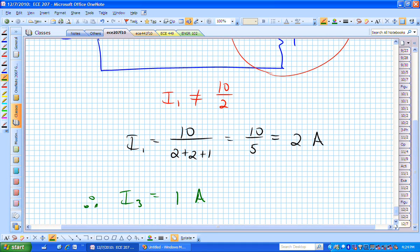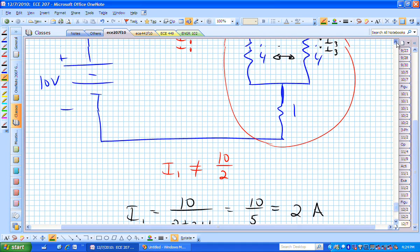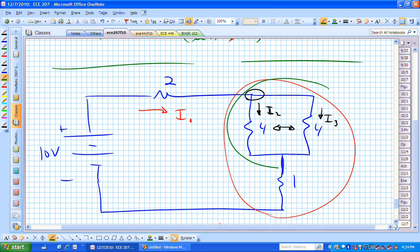What's the current coming out of that green super node? It has to be the same as what went in. What went in was I1. I4 better be 2. And it's equivalently the sum of I2 plus I3. That stuff should be starting to feel very warm and fuzzy for you.